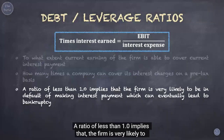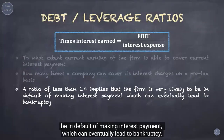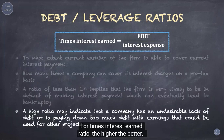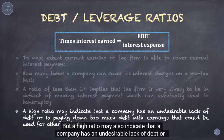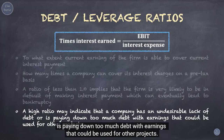A ratio of less than 1.0 implies that the firm is very likely to be in default on its interest payments, which can eventually lead to bankruptcy. For times interest earned, the higher the better. However, a very high ratio may also indicate an undesirable lack of debt, or that the company is paying down too much debt with earnings that could be used for other projects.